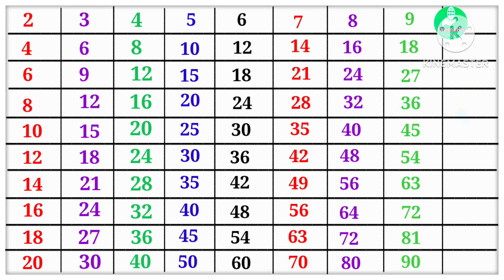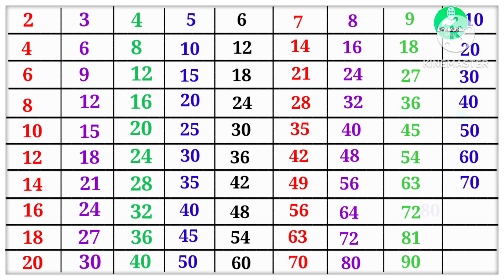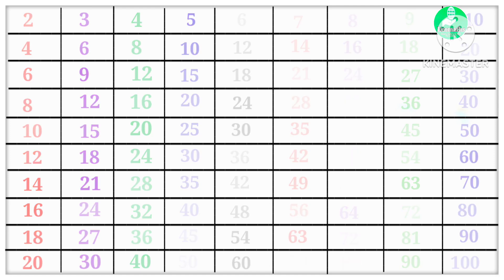10 1s are 10, 10 2s are 20, 10 3s are 30, 10 4s are 40, 10 5s are 50, 10 6s are 60, 10 7s are 70, 10 8s are 80, 10 9s are 90, 10 10s are 100.